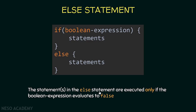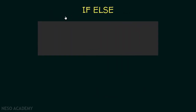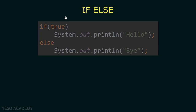The statement or statements inside the else block are executed only if the boolean expression evaluates to false. So if this expression is true we execute these statements, and if it is not true we execute the statements inside the else.